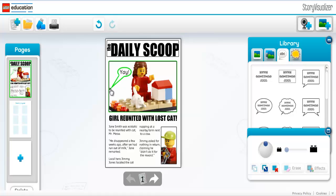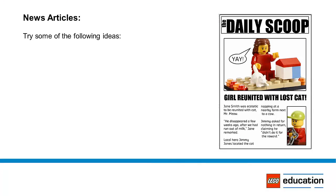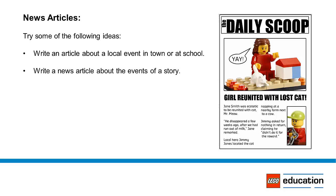If the format is followed correctly, a news article is an effective and direct way to communicate important information. Try some of the following ideas: have your students write an article about a local event in their town or at their school, or ask students to convert the event in a story into a newspaper article or comic by having each panel represent the who, what, where, when, why, and how of a story.